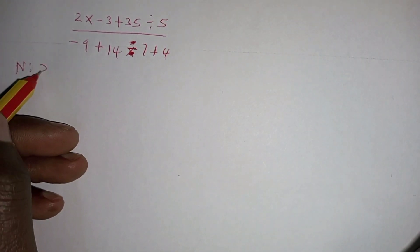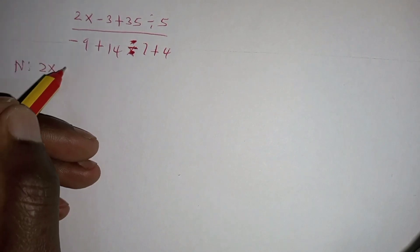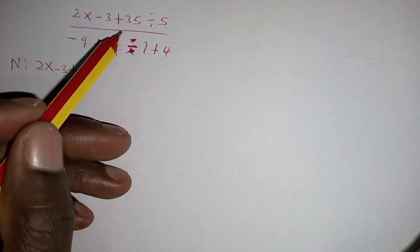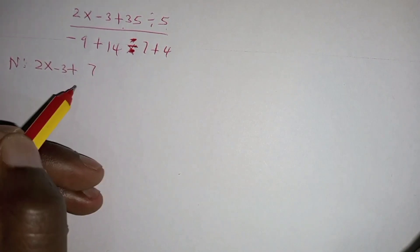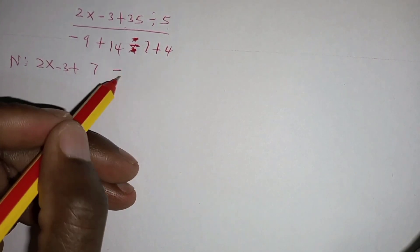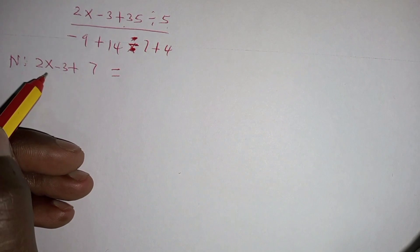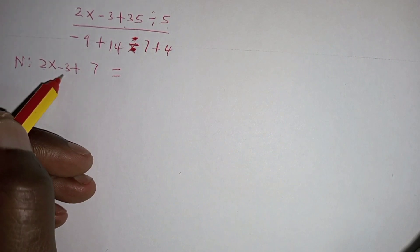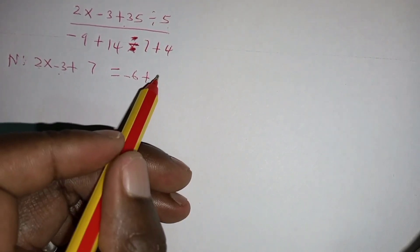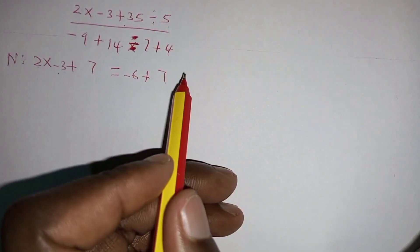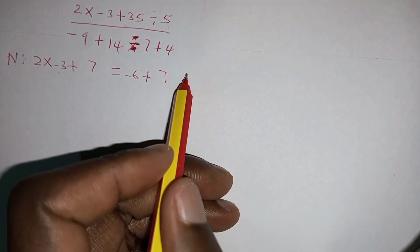You have 2 multiplied by negative 3 plus 35 divided by 5 will be 7. Now we come to multiplication. 2 times negative 3 will be negative 6 plus 7. Negative 6 plus 7, the result will be 1.